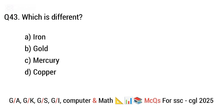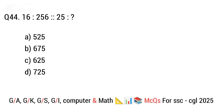Question 44. 16:2 as 56:25 — proportion. The right answer is option C. 625.